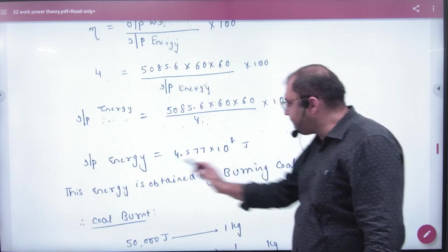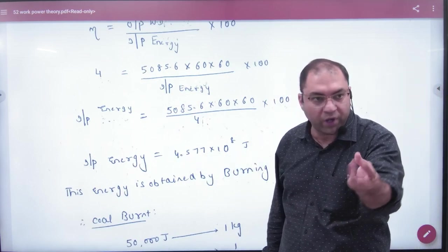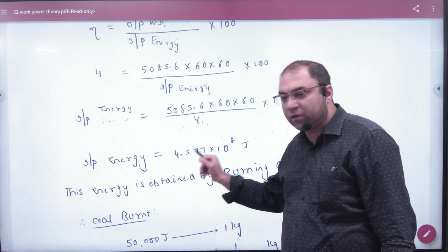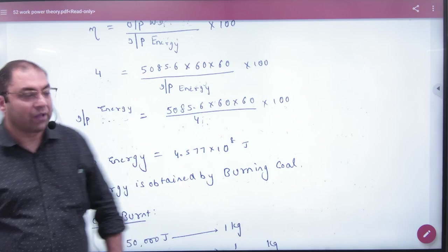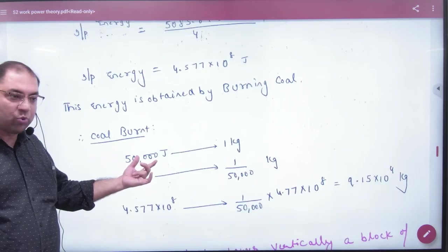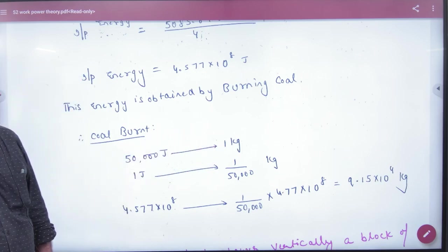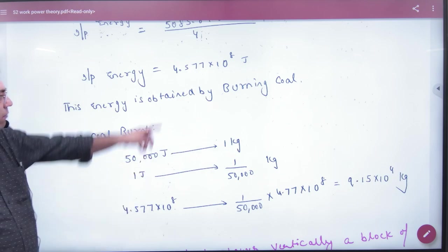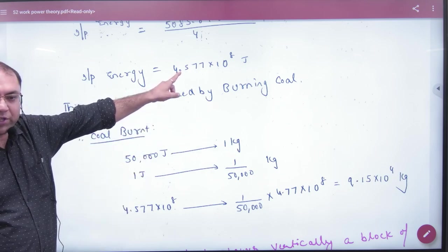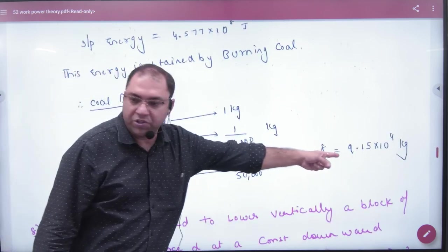Cross multiply to get the input energy. This energy came from burning coal. The question states that 50,000 joules of energy is released when 1 kg of coal burns. Using the unitary method, if 50,000 joules comes from 1 kg, then for the total input energy the engine consumed, we calculate the corresponding coal mass. This is the answer.